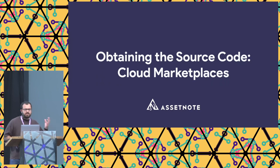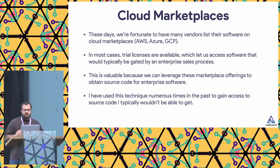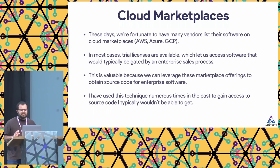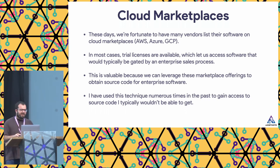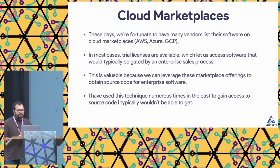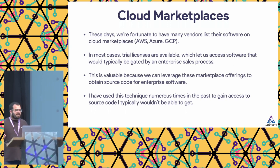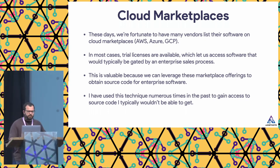The first technique is obtaining the source code through cloud marketplaces. Many vendors list their software on these cloud marketplaces on AWS, Azure, and GCP. In many cases, you're able to obtain a trial license that lets you access software that's typically gated through an enterprise sales process. You can spin up enterprise software from these marketplaces and get access to source code by either dumping the disk or getting shell access. I used this technique to gain access to Teradici PCoIP Connection Manager, which I found running on fb.com, and it was available on AWS Marketplace.